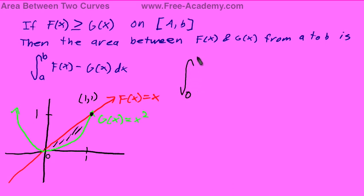So we're going to go from the interval from 0 to 1, f of x equals x minus g of x, which is x squared, dx.